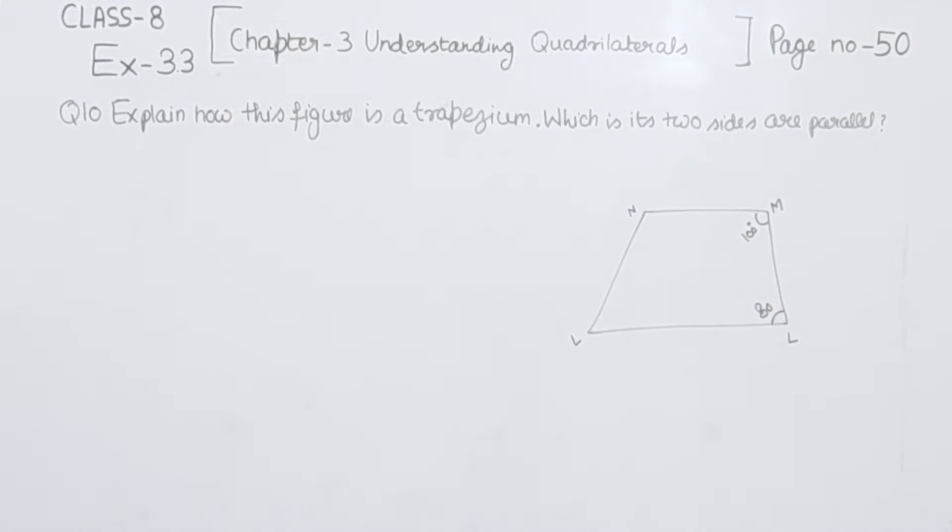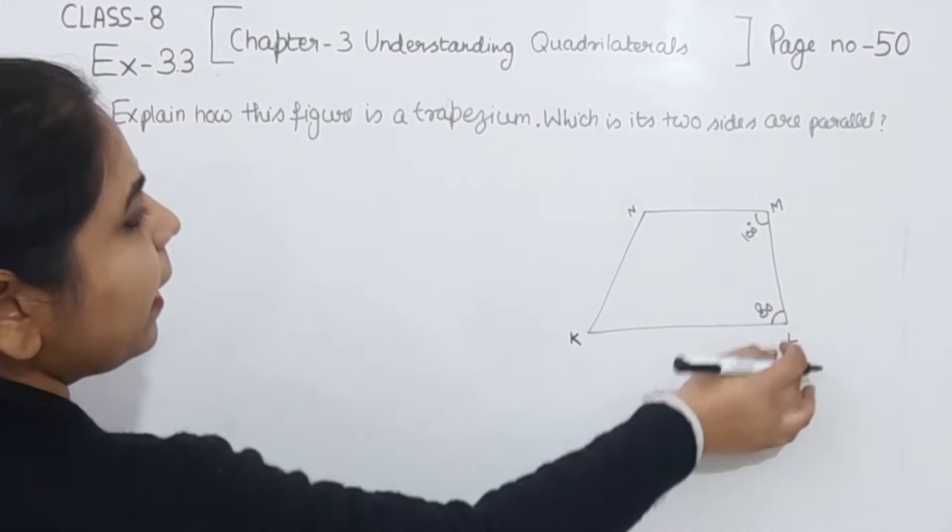Explain how this figure is a trapezium which of its two sides are parallel. First of all, this is the figure we are having. We are going to name it. We have given this as KLMN.